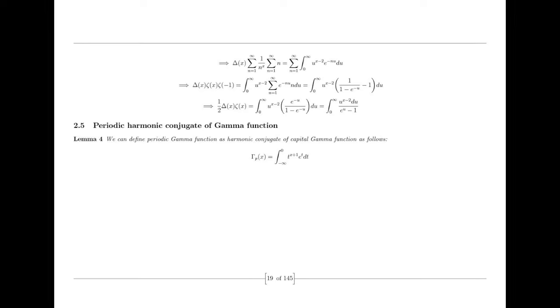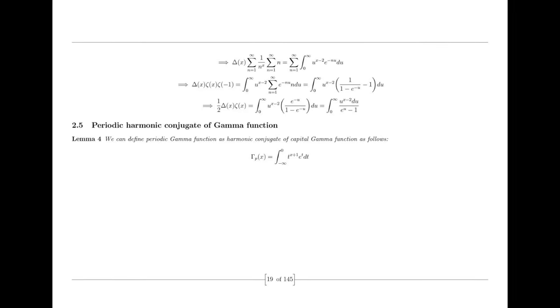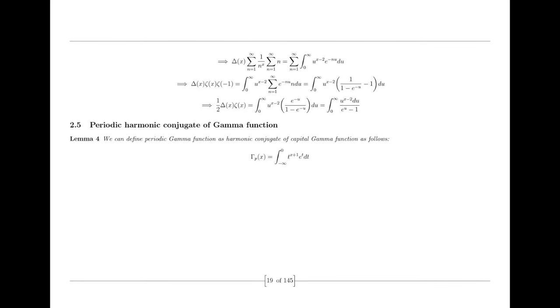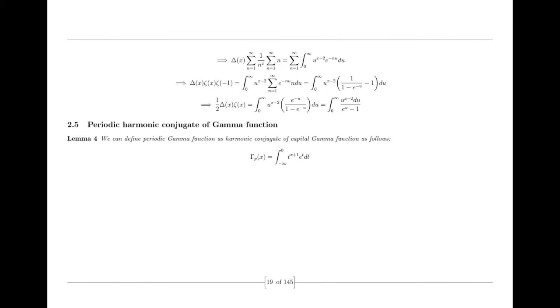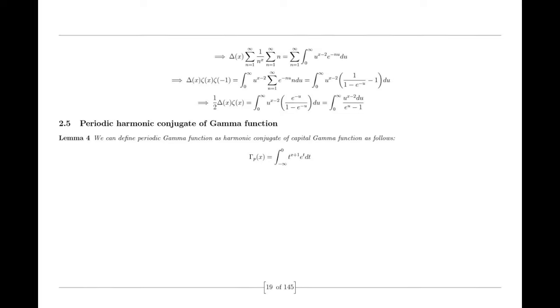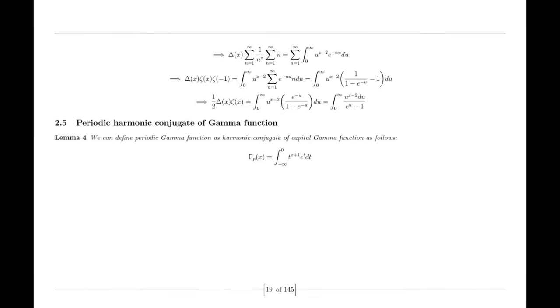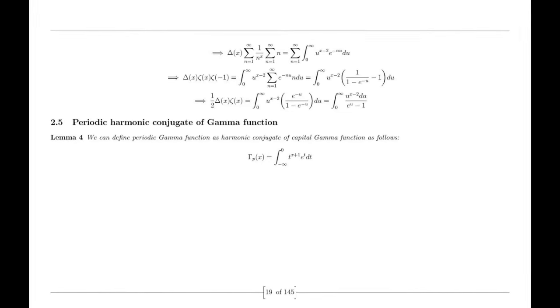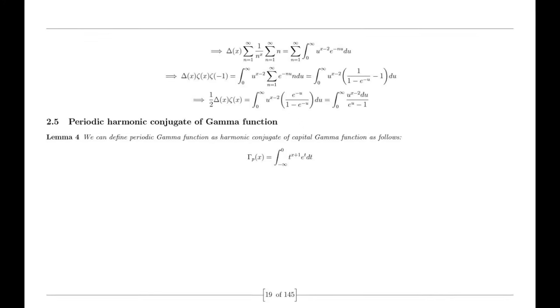I realized that my initial elementary proof lacked the novel mathematical insights necessary for such a pivotal problem. I began to accumulate the pitfalls of contemporary mathematics, which may be the reason why we lacked the tools to solve the Riemann hypothesis, as acclaimed mathematician Terence Tao once remarked in an interview.